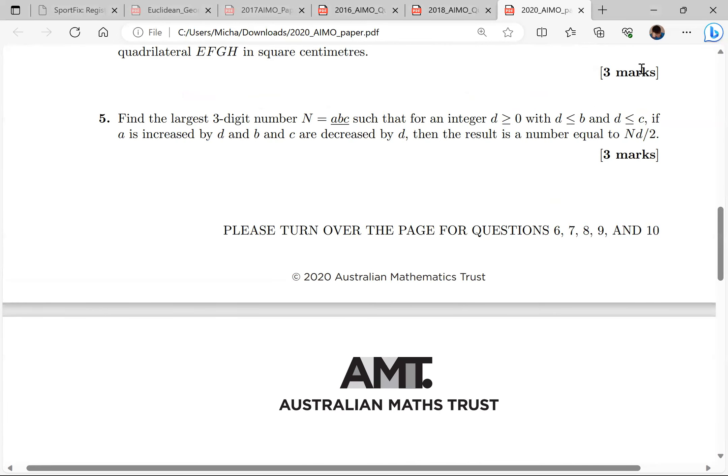So d equals 4, we have 100 times a plus d plus 10 times b minus d, which is 4, plus c minus 4 equals 200 times a plus 20b plus 2c.